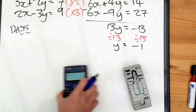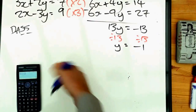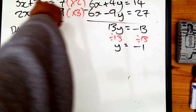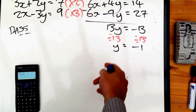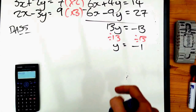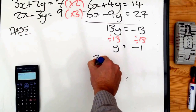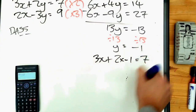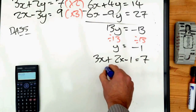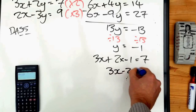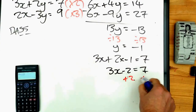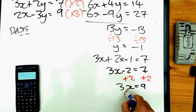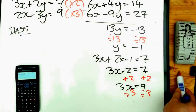So we're halfway to getting our solution. What I need to do next is find out what the corresponding x value is. I know what y is — it's minus one. I can substitute that into either equation and I will end up with an equation which gives me the x value. I'm going to choose the top one. So three x plus two times y — two times minus one — is equal to seven. Two times minus one is minus two, so three x minus two equals seven. Add two to both sides and we get three x is equal to nine. Divide both sides by three and we end up with x is equal to three.